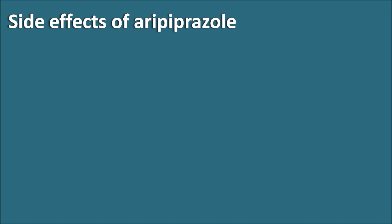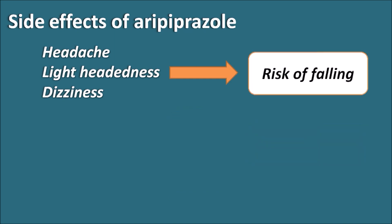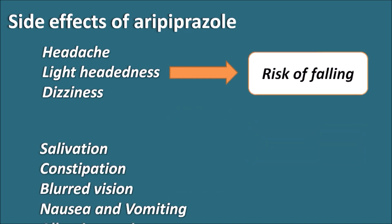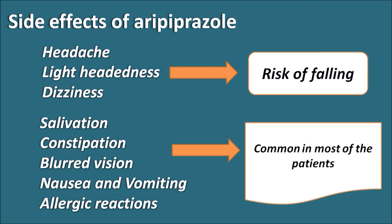Even though aripiprazole has less extrapyramidal side effects, it can produce other side effects. These include headache, lightheadedness, and dizziness — lightheadedness may cause a risk of falling in patients. Other side effects include increased salivation, constipation, blurred vision, nausea, vomiting, and allergic reactions. All these side effects are common in most patients treated with aripiprazole.